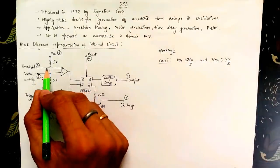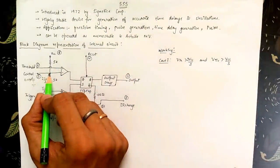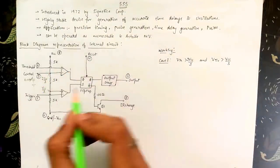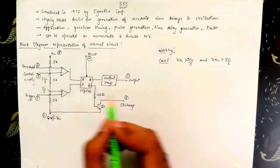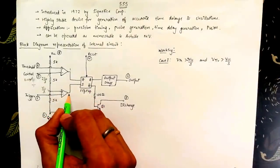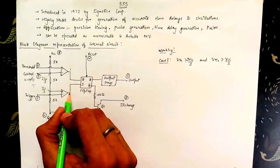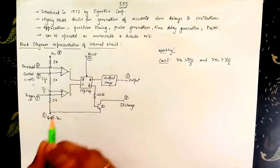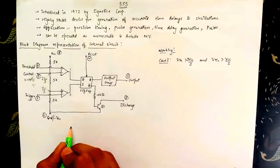Input to the positive terminal is greater than the voltage reference set at the negative terminal of the comparator. Therefore its output is logic high. Similarly the voltage at trigger pin is greater than Vcc by 3 voltage set at the positive terminal of the comparator. Thus the output is logic low.